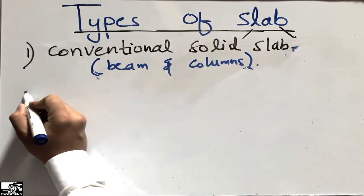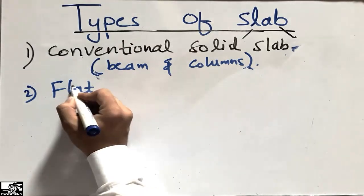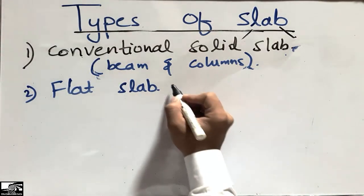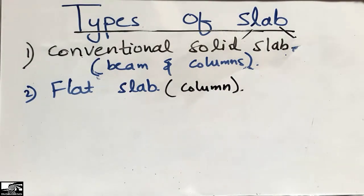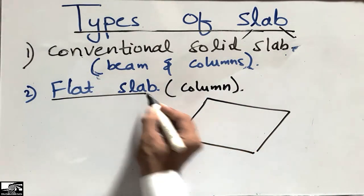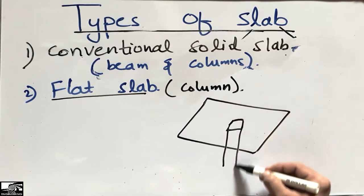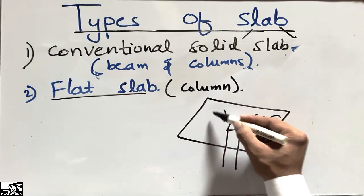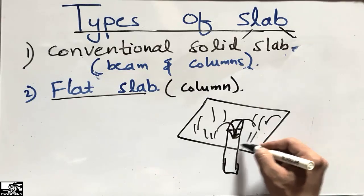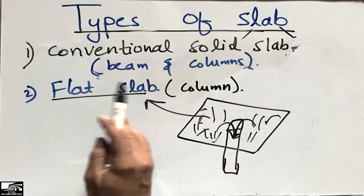Another type of slab is the flat slab. This is the type of slab which is supported only by columns — there are no beams. The whole load coming on the slab is supported and transferred directly to the columns. This type of slab is called the flat slab, and there are four different subtypes within the flat slab.